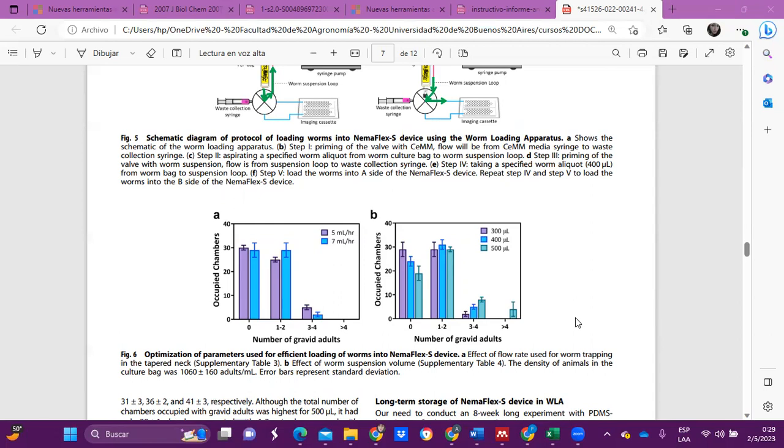Their objective was to identify conditions that result in most chambers being occupied with one to two gravid adults to allow convenient software processing of neural detection. As you can see in this view, different flow rates of 5 and 7 milliliters per hour were used for trapping the worms in the serpentine neck, and the aspirate worm suspension volume was kept constant at 300 microliters. They found that the number of chambers occupied by one to two gravid adults were relatively high compared with the 5 milliliters per hour flow rate.